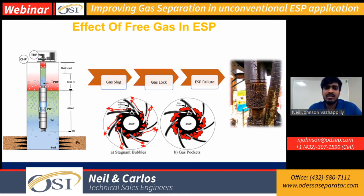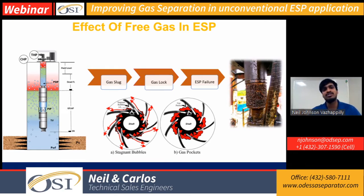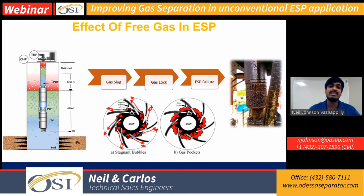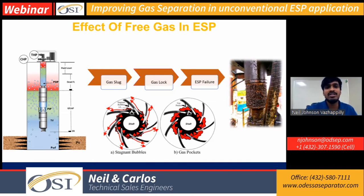What are the effects of free gas? These smaller stagnant bubbles go and land in the low pressure zones of the impeller vanes, eventually creating a large pocket of gas, which leads to gas lock and ultimately ESP failure. Additionally, due to gas presence, we see high motor temperatures, which promotes the formation of scale not only around the motor but even at the intake or inside the pump, leading to further failures caused by gas.